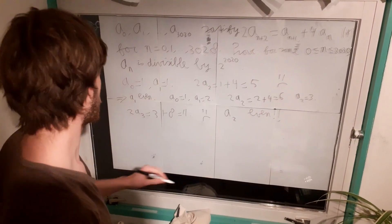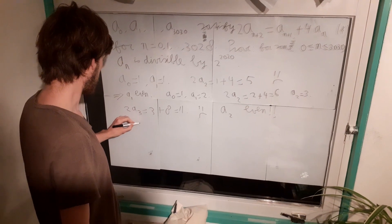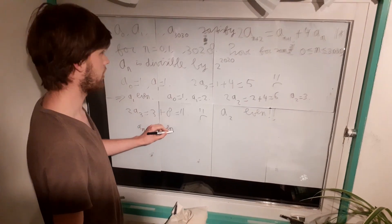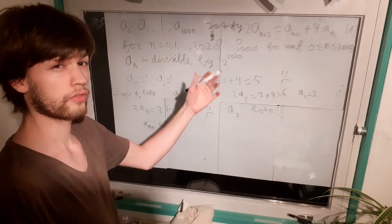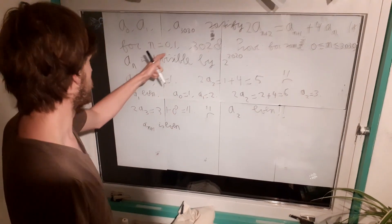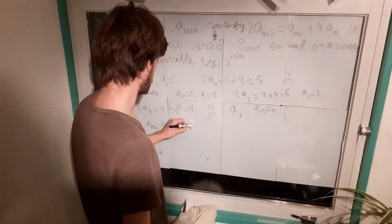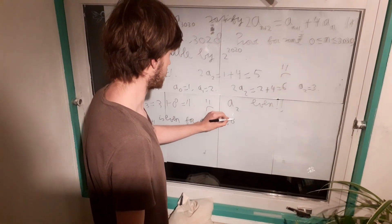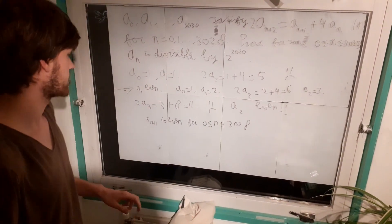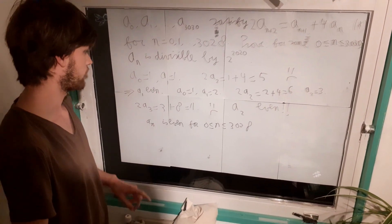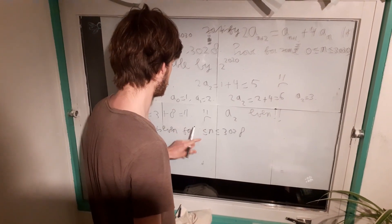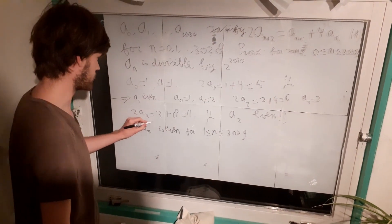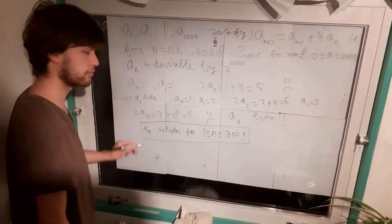If you look at the formula star above, we actually see that a_{n+1} must be even. But be careful, this does not hold for all n. Only for the n in this sequence. So for n between 0 and 3028. So another way to formulate this is, of course, that a_n is even for n at least 1 and at most 3029. Okay, so this is what we have proven now.